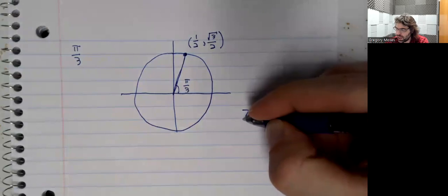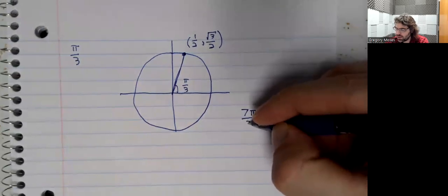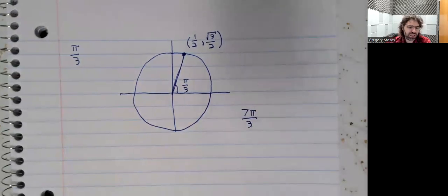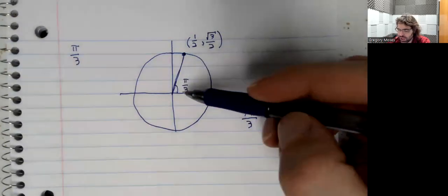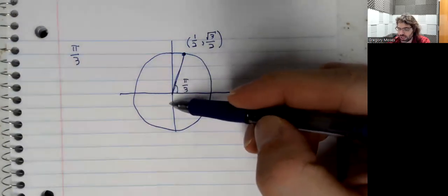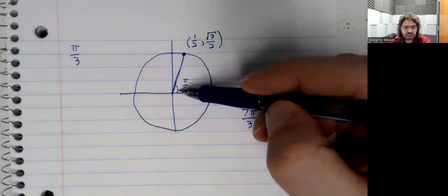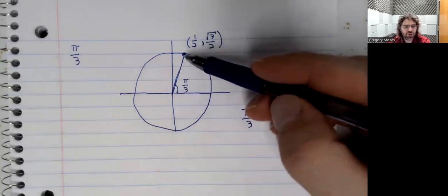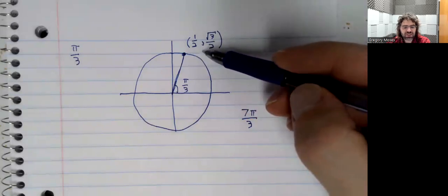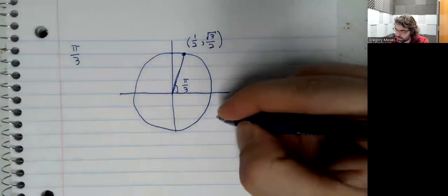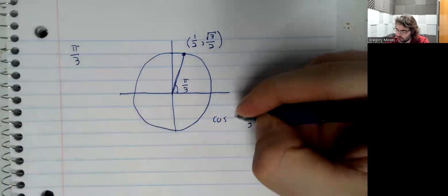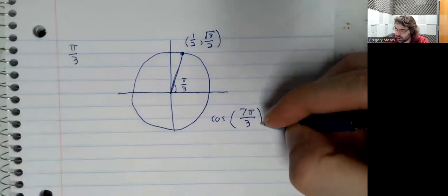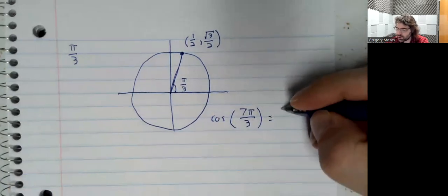7 pi over 3, for example. If you go all the way around the circle once and then an additional pi over 3, you wind up at the exact same place.